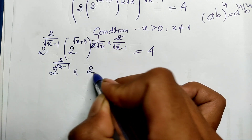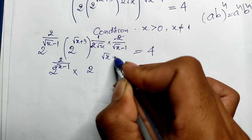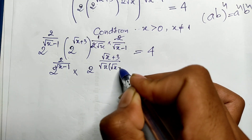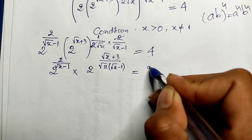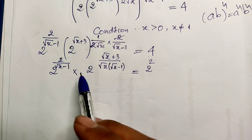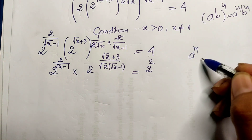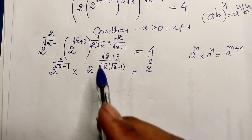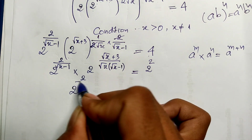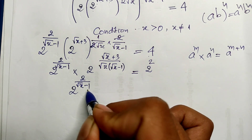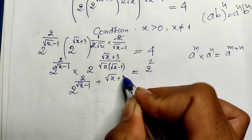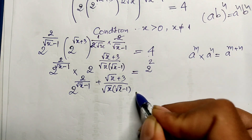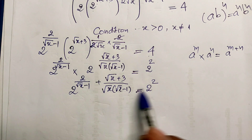We have 2 to the power of (square root of h plus 3) divided by square root of h, multiplied by square root of h minus 1, equals 2 squared. We use the rule that a to the power m times a to the power n equals a to the power m plus n. So we get 2 to the power of (2 divided by square root of h minus 1 plus square root of h plus 3) divided by square root of h, multiplied by square root of h minus 1, equals 2 squared.